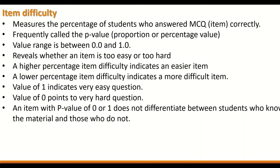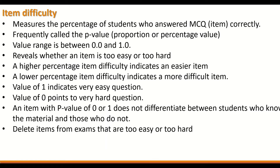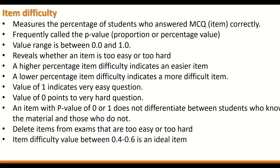A value of 1 indicates a very easy question and a value of 0 points to a very hard question. An item with a p-value of 0 or 1 does not differentiate between students who know the material and those who do not. In this case, delete that item from the exam. An ideal question has an item difficulty value between 0.4 and 0.6.